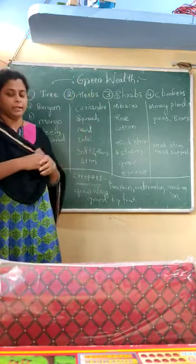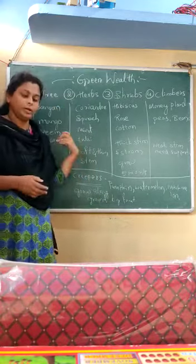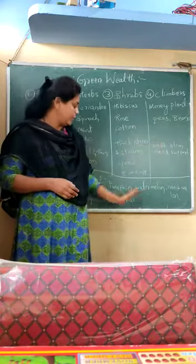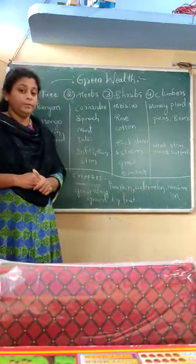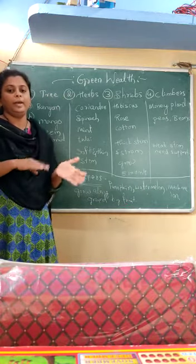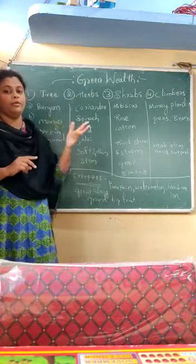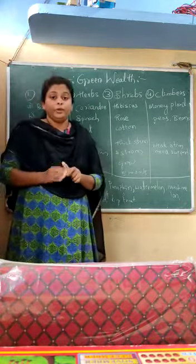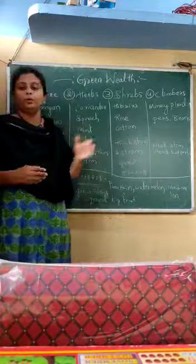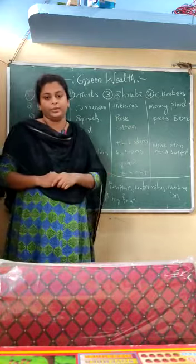We will discuss more about this in the next video. I hope you have understood what we discussed today. In the next video we are going to discuss about shrubs, climbers, and creepers. Before ending, I want to give you some homework: write down how we have divided the green wealth into five types, and for the first two types - trees and herbs - give examples and write about them.